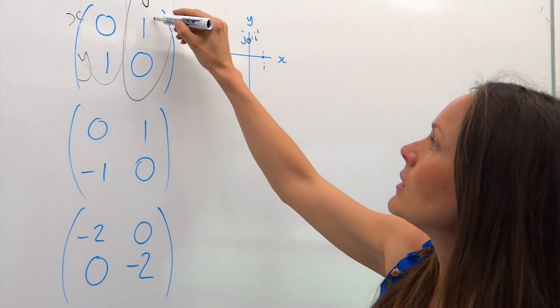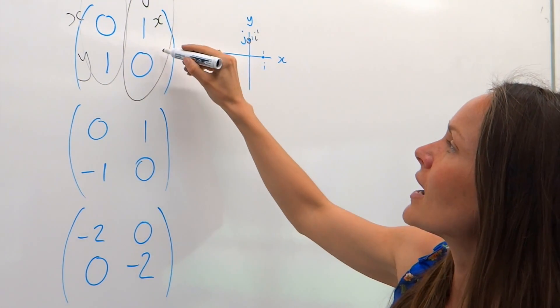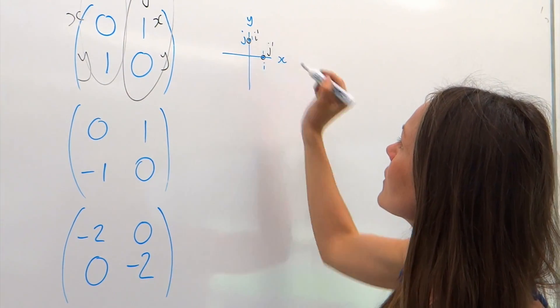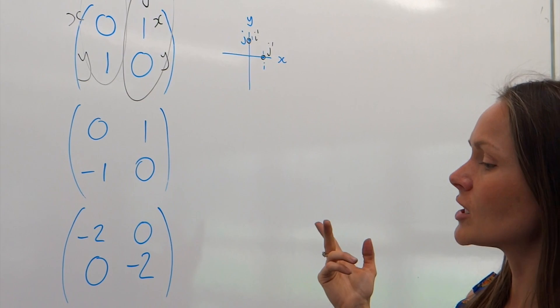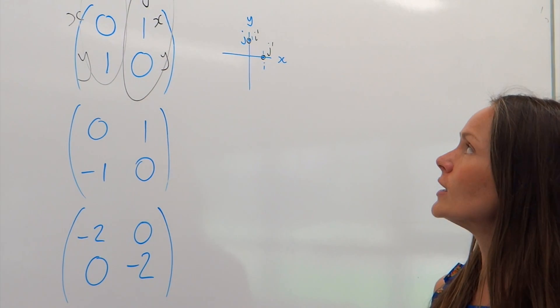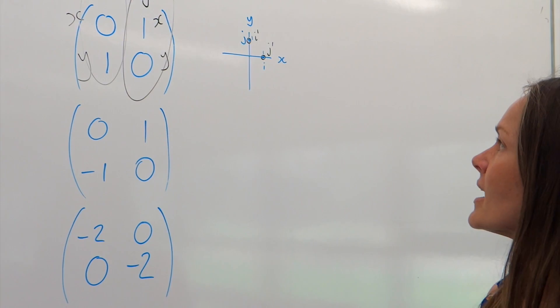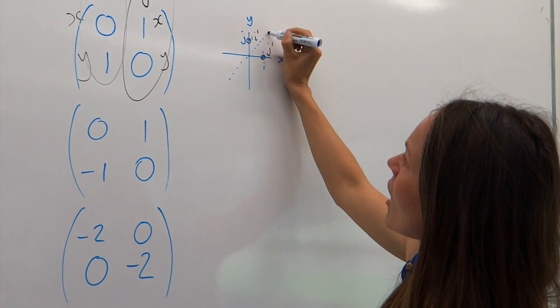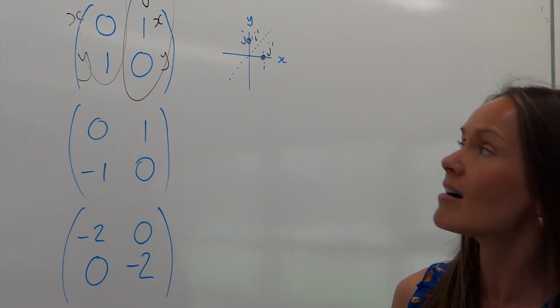So, this time, the x coordinate is one, and the y coordinate is zero, which would be there. So, i and j have actually swapped places. Now, if you're good at transformations, hopefully you've already spotted this one. It's a reflection.